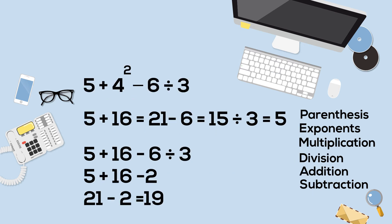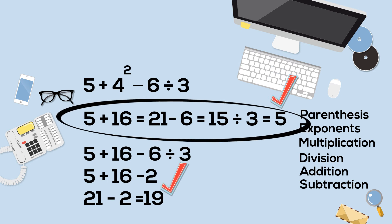And for the last one, which is correct, 5 or 19? This has exponents. The first example, I will just work from left to right. 5 plus 4 squared, which is 16, is 21. Subtract 6, that equals 15, divide by 3, and that equals 5.